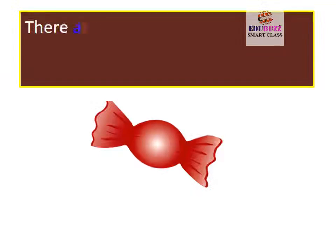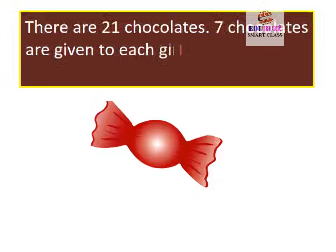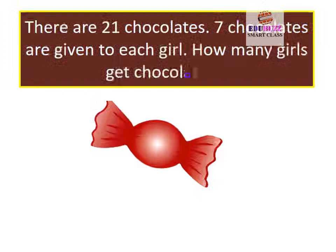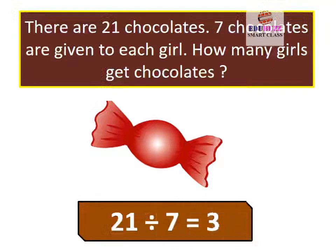There are 21 chocolates. 7 chocolates are given to each girl. How many girls get chocolates? 21 divided by 7 is equal to 3.